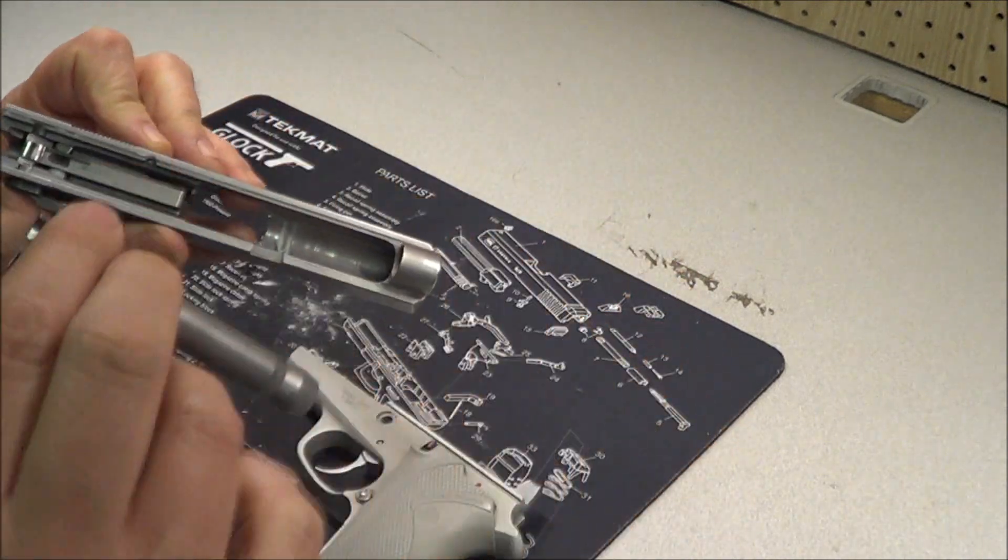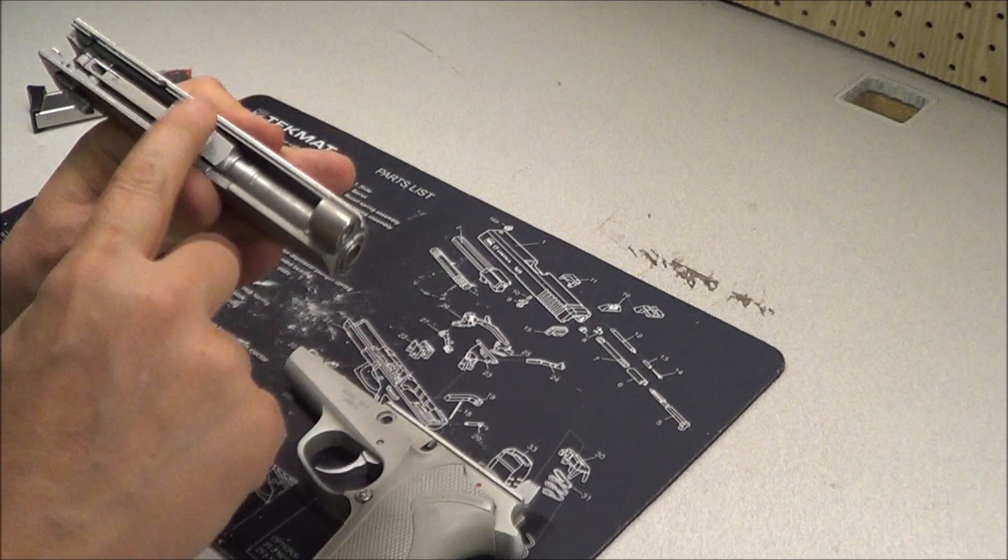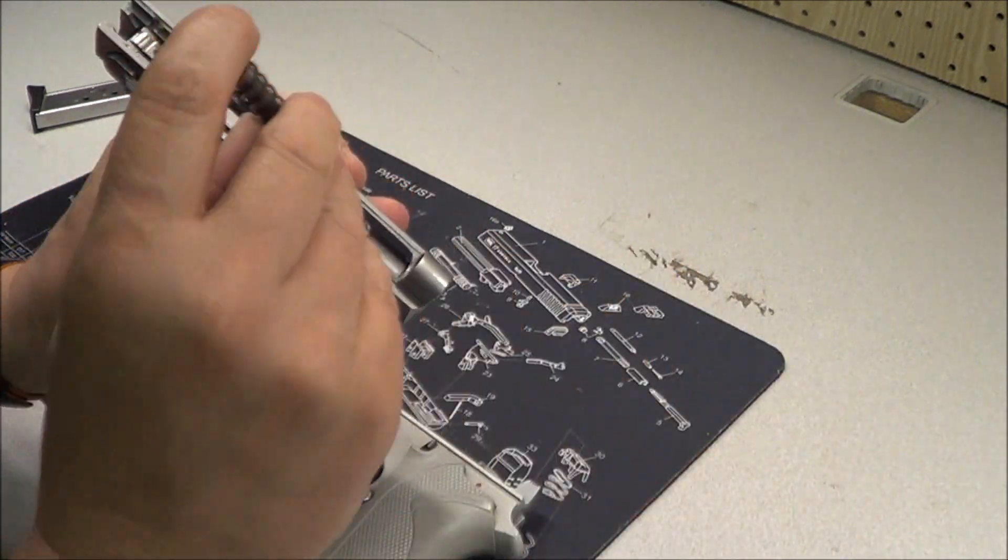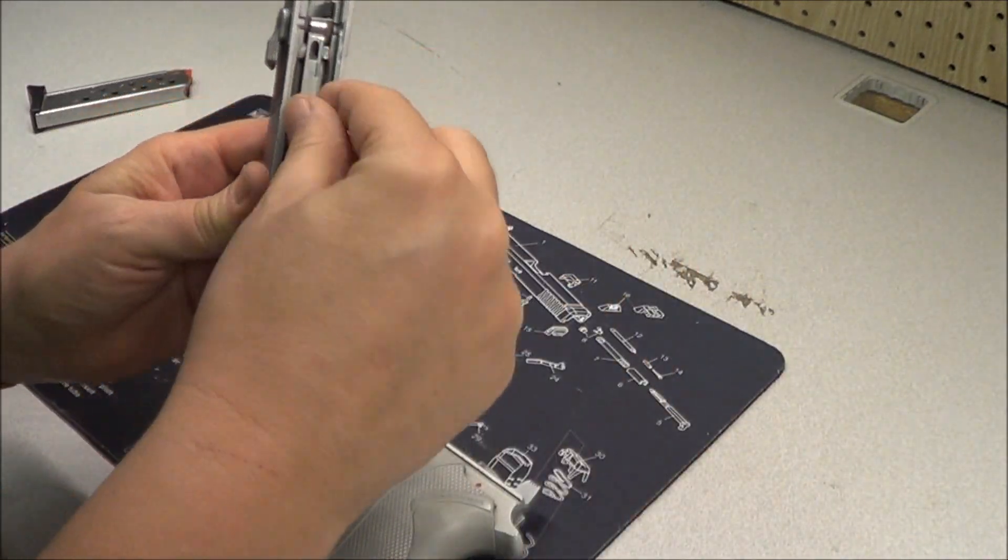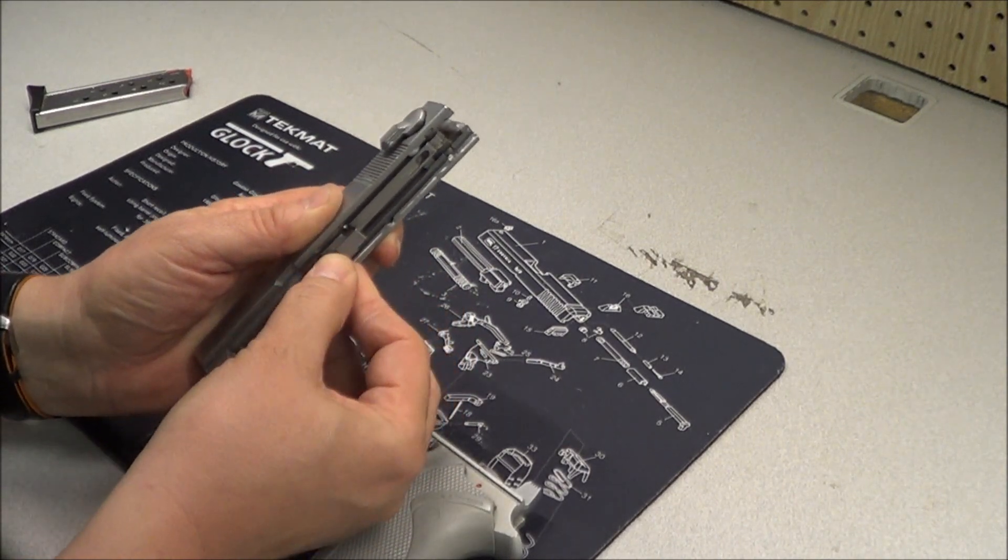Put the barrel inside the slide. Lock it to the rear. Put your guide rod, your spring into the cup here. And pull the guide rod back. Make sure you click it on the catch on that little spot right there.